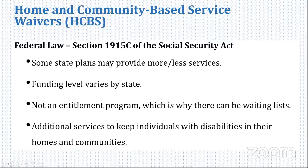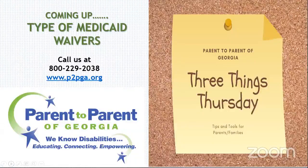So essentially, the person needs to require additional services above what Medicaid typically provides — and that's what is covered under the home and community-based services. In the next session next week, we will cover some of those services in more detail. I just wanted to give you an overview of what a home and community-based waiver is, why the word 'waiver' is used, and why there are waiting lists.